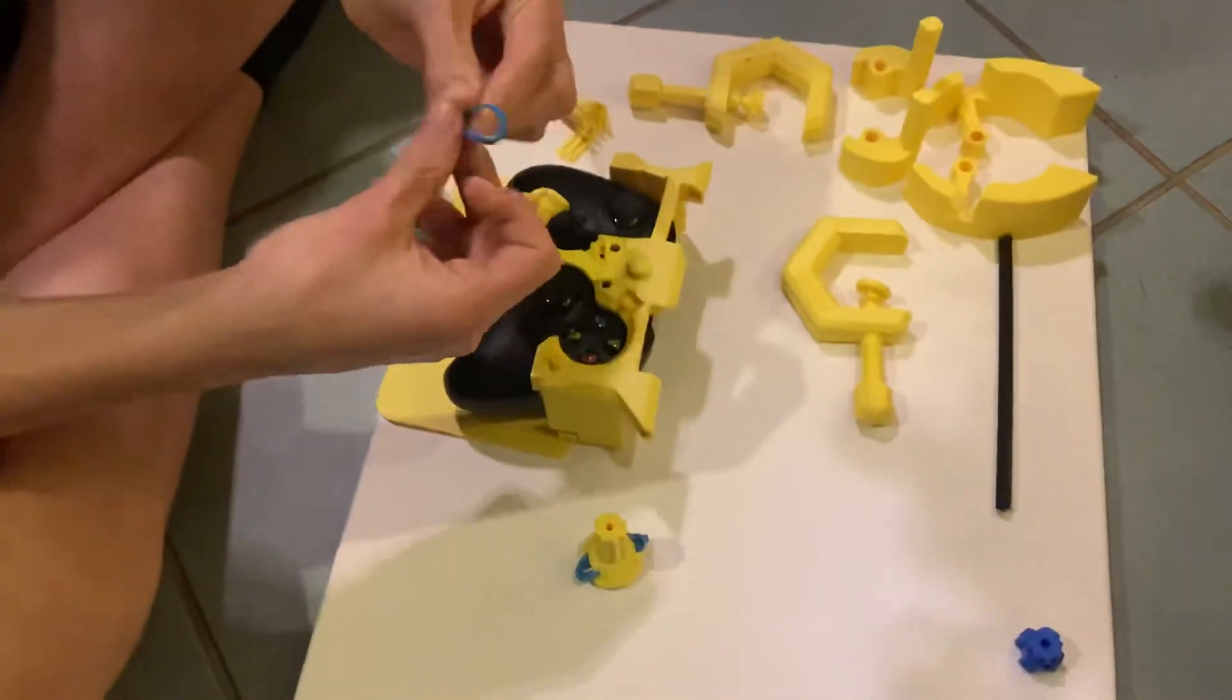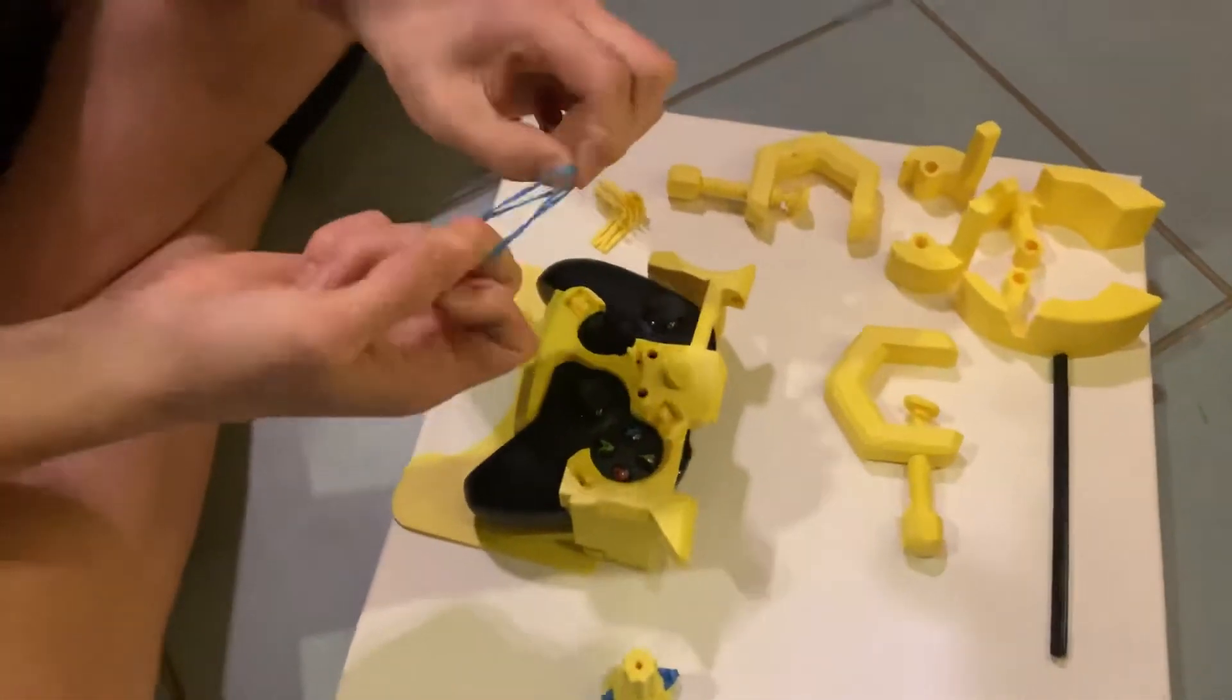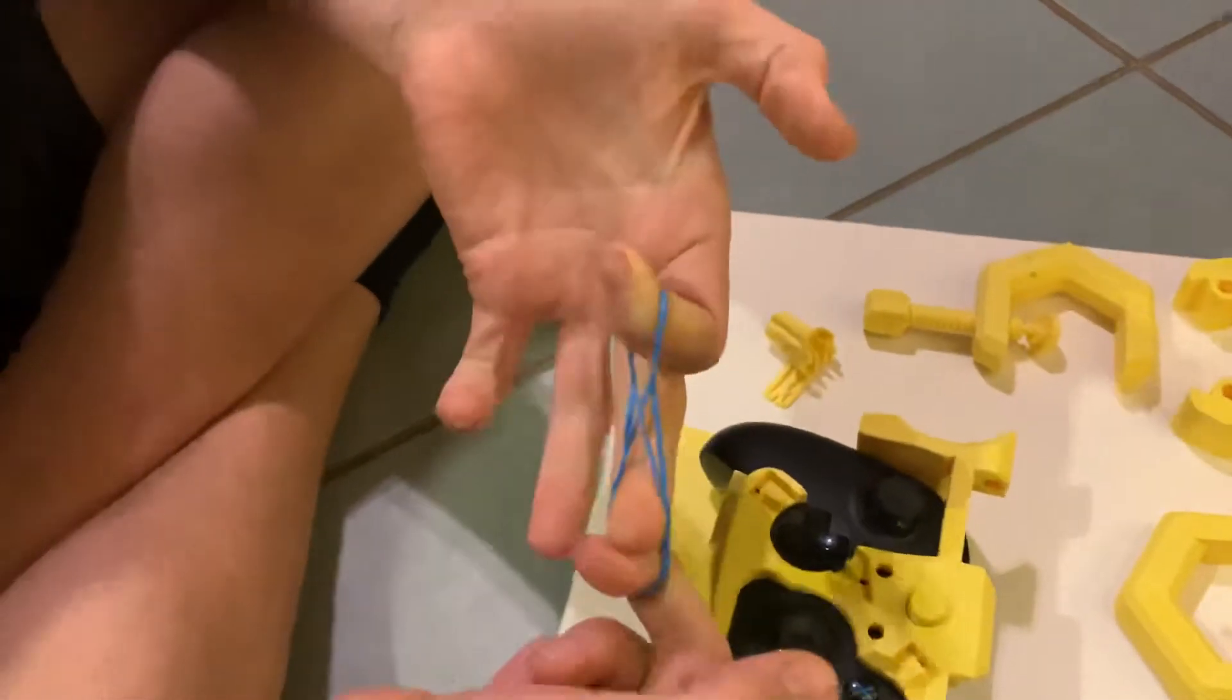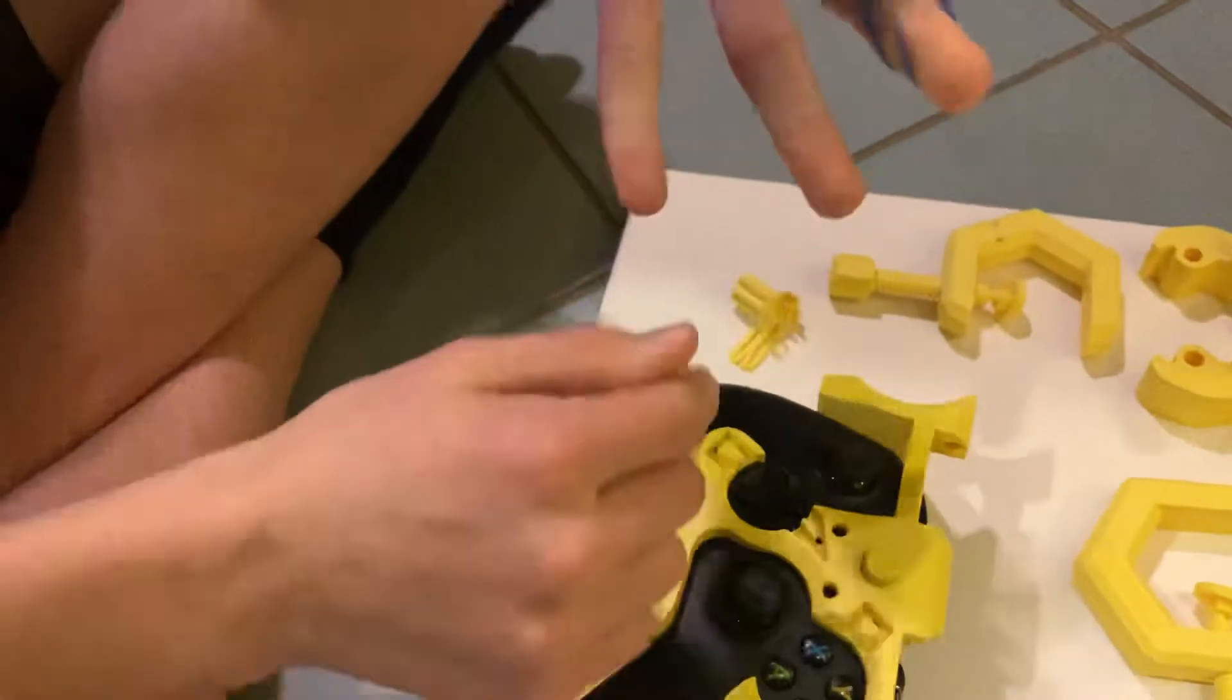you fold it in half like this and then you twist it to make it look like an O with an X in the middle.